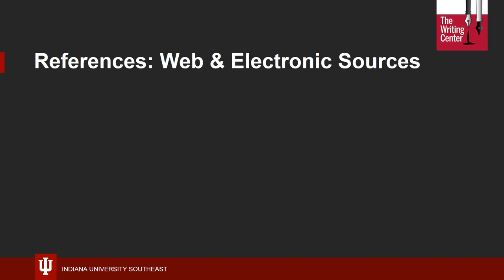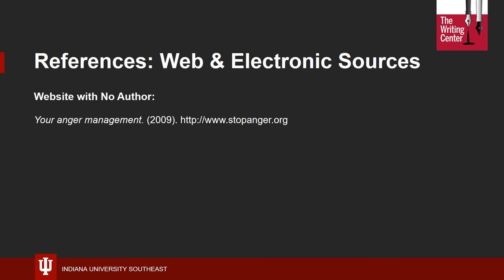For electronic and web-based sources, one problem students frequently encounter is that many websites do not name authors. If you choose to cite a source with no author, in italics provide the full title of the website, with the first word matching how it is listed in your in-text citation so that the reader and your professor can see that they align. Then provide the year and the URL.